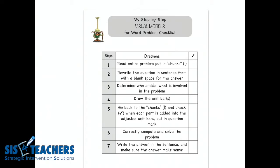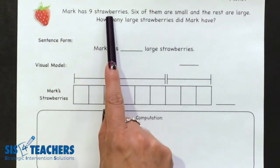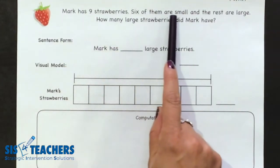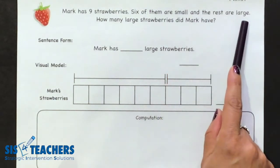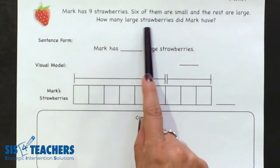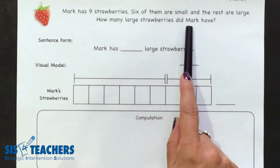Step one is to read the entire problem by putting in the chunks. We're going to read the whole problem entirely through and then go back and read the different chunks. So as I go back to our story mat, I'm going to read the problem: Mark has nine strawberries, six of them are small, and the rest are large. How many large strawberries did Mark have?